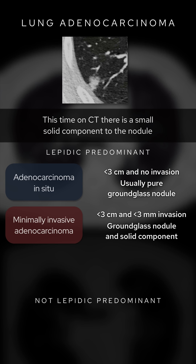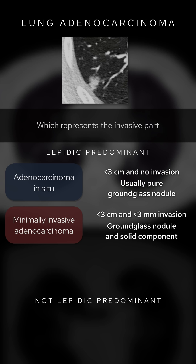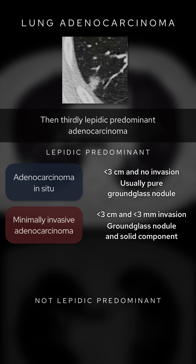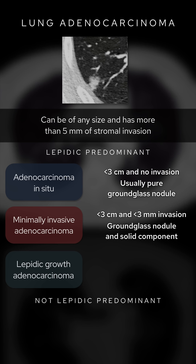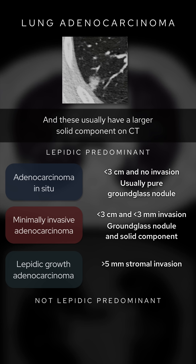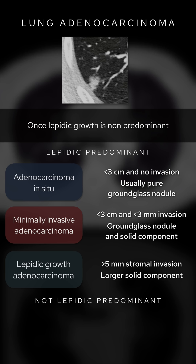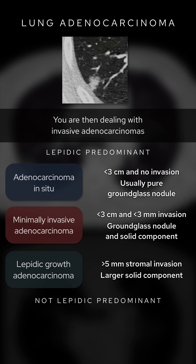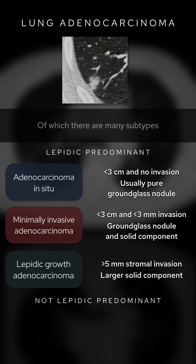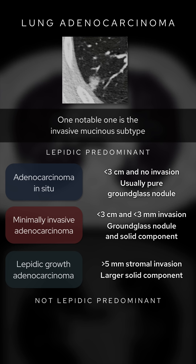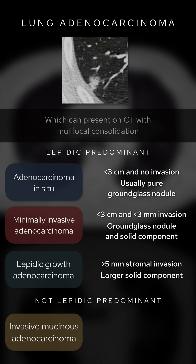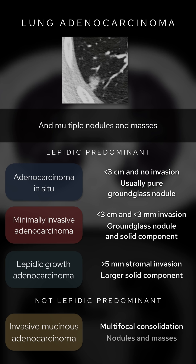Thirdly, lepidic predominant adenocarcinoma can be of any size and has more than five millimeters of stromal invasion; these usually have a larger solid component on CT. Once lepidic growth is non-predominant, you are dealing with invasive adenocarcinomas, of which there are many subtypes. One notable one is the invasive mucinous subtype, which can present on CT with multifocal consolidation and multiple nodules and masses — this can be fairly aggressive.